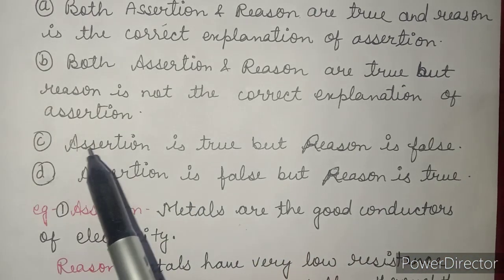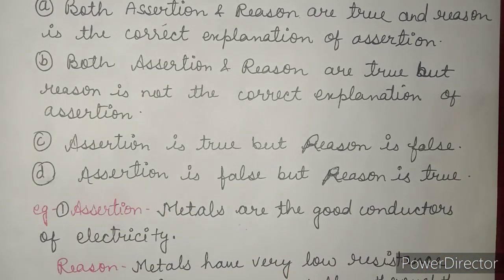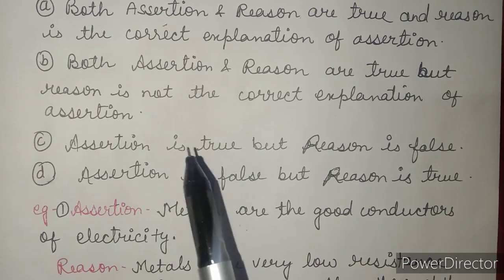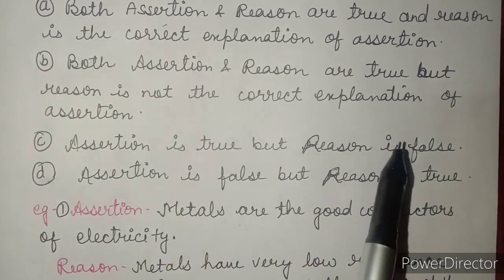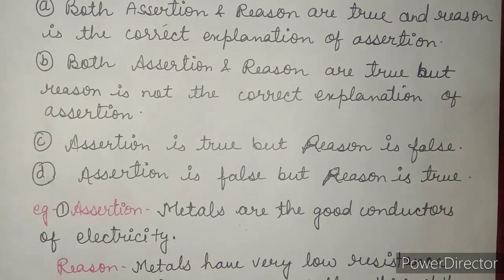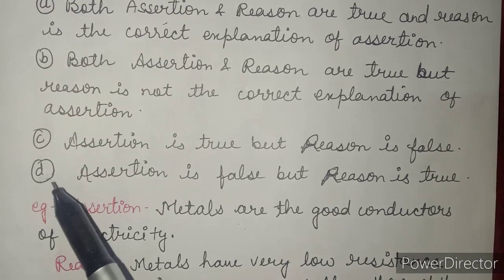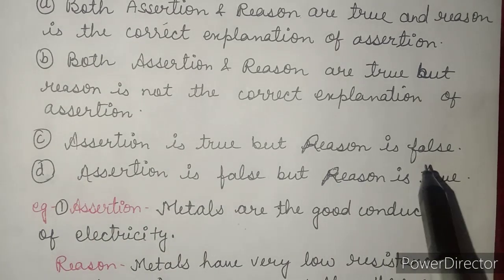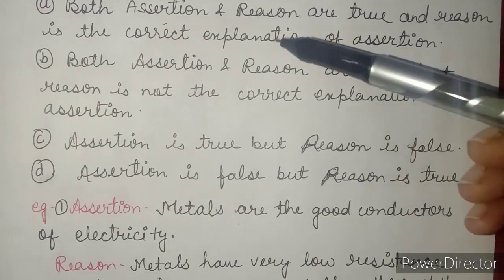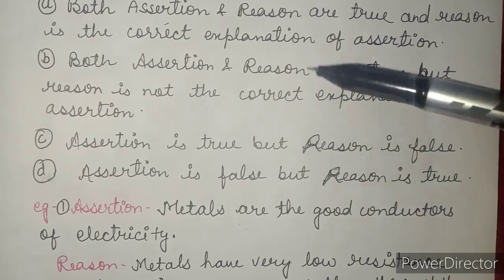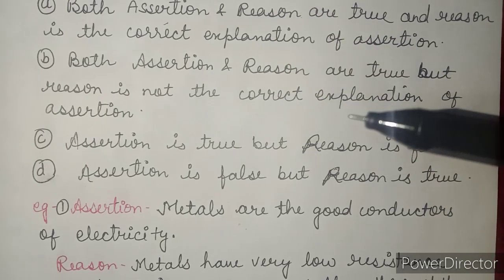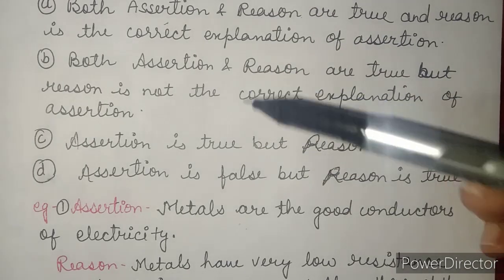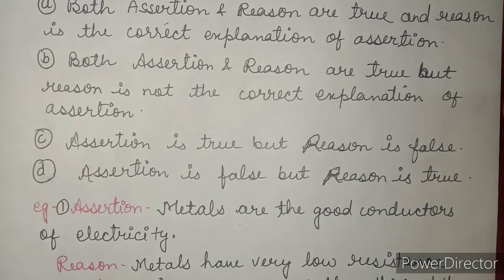The third option is assertion is true but reason is false. The fourth option is assertion is false but reason is true. You will have to select one of these four options according to the assertion and reason given.